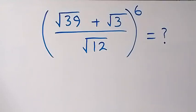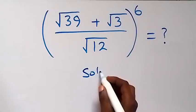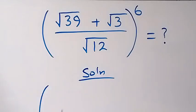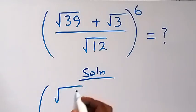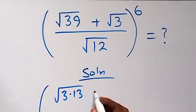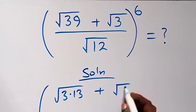Hello, you are welcome. How to solve this nice math problem involving square root? From here we can rewrite this as square root of 39, which can be written as 3 times 13, then plus root 3.